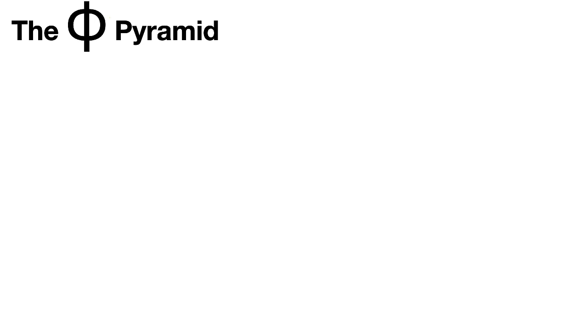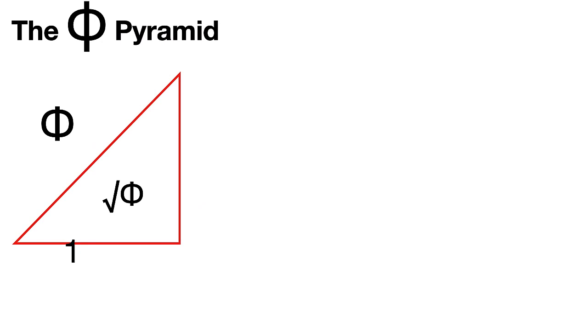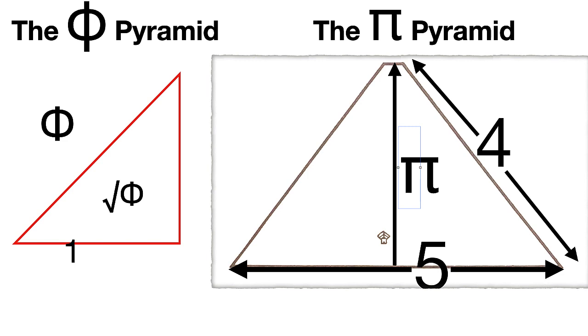There's the Phi pyramid, the clean, the hypotenuse is Phi, the height is the square root of Phi, half base is 1. Here's the Pi pyramid. It's like wow. It's like the 3, 4, 5 famous Pythagorean, but it's not a 3, 4, 5. Pi is sort of like 3, but the height is Pi. The apothem is 4, and the base is 5. When you use the existing pyramid, what's there now, not some idealized original version.